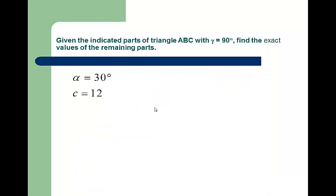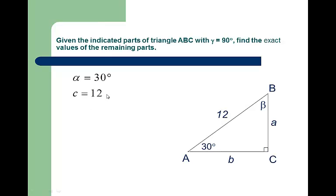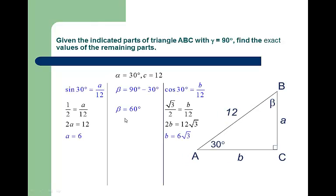Given the indicated parts of triangle ABC with gamma 90 degrees, find the exact values of the remaining parts. It's asking for the exact value, which means no calculator. We have alpha 30 degrees and side C is 12. I would suggest you draw a right triangle every single time. Notice alpha is 30 degrees, C is 12, and gamma is 90. We have three pieces of the puzzle. I did sine of 30 degrees, which is opposite over hypotenuse. Sine of 30 is a half. I cross multiply and A is 6.